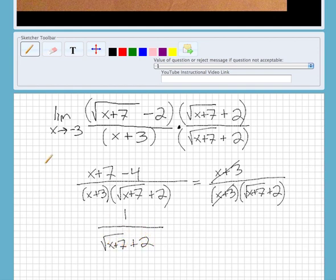Now we're able to plug in the negative 3. If you plug in negative 3 into our expression, we'll get 1 over square root of negative 3 plus 7 plus 2.